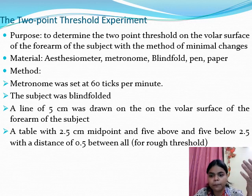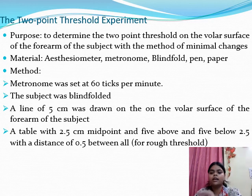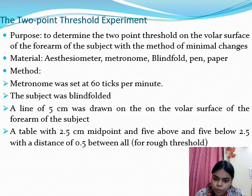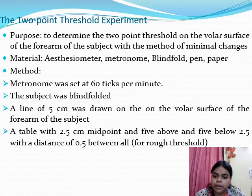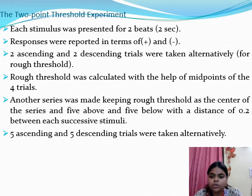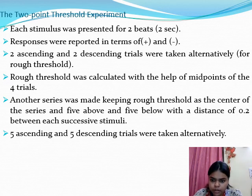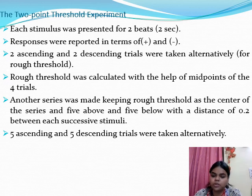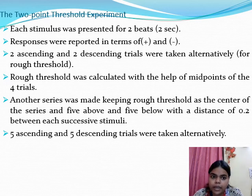In the preliminary setup, you draw a rough threshold table. The table was drawn with 2.5 taken as the midpoint, with five places above and five places below, generating a series with a difference of 0.5 centimeter. The metronome was set at 60 ticks per minute, so each stimulus was presented for two ticks. Starting from zero, then 0.5, 1, 1.5, and so on — each distance was placed for two ticks.